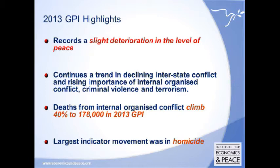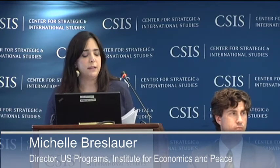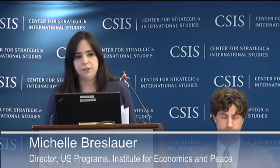The 2013 Global Peace Index shows that peace has had a slight deterioration in the last year. The main trend driving this was an increase in homicides and deaths from internal organized conflict. Internal organized conflict has been driven by 70,000 deaths in Syria, but also by continued deaths in Mexico's drug war. In the last year, the drug war in Mexico has claimed twice as many lives as the conflicts in Iraq and Afghanistan combined.